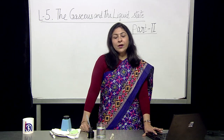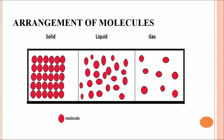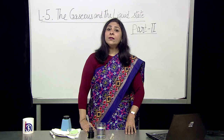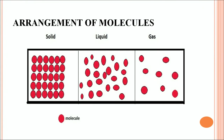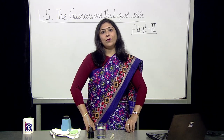Now let's first discuss about the arrangement of molecules. You can see here how the molecules are arranged in solid, liquid and gases. The molecules are very very close to each other in solid, which means the shape and the volume is fixed in solid, and they are based on the intermolecular force of attraction. The intermolecular force of attraction is maximum in solid, lesser in liquid, and least in gases. In solids, the intermolecular space is negligible, while in liquid it is more than solid but lesser than gases.